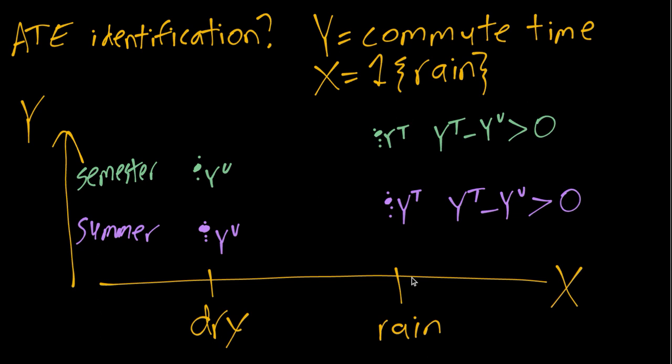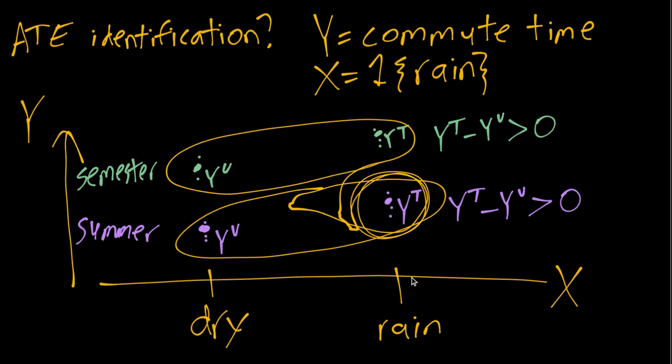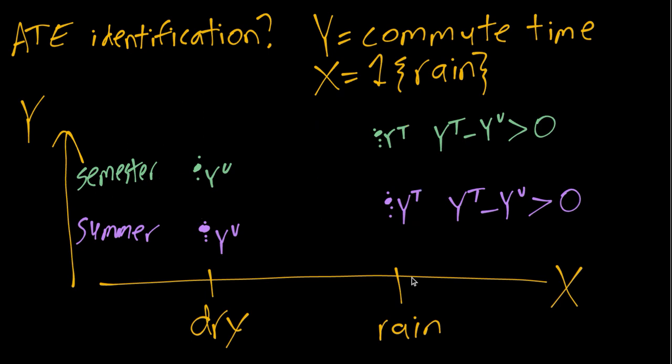So the problem then is that our X variable is not independent of our potential outcomes. When we have low potential outcomes, we end up getting X equals 1. When we have high potential outcomes, we end up getting X equals 0 and observing the untreated potential outcome. So what we end up seeing is this and this.